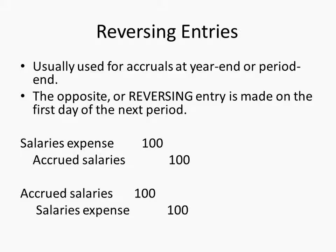So reversing entries are usually for accruals at year end or period end, so the opposite is made the first day of the next period. I gave you that salaries example — if you had $700 in salaries every week for seven work days, and two days of that takes place and then you have an end of the period, it becomes December 31st and you have to accrue those two days. So you have a $200 accrual that you would reverse, or here I have $100 in the following period.